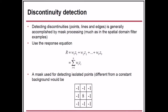Now let us see how we detect discontinuity. Detecting discontinuities — for example, points, lines, and edges — is generally accomplished by mask processing in the spatial domain. We use the response equation: r = sum from i=1 to 9 of w_i * z_i. This is from our earlier discussions of image processing where we use a kernel and mask for edge detection.